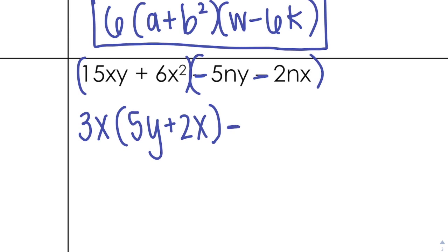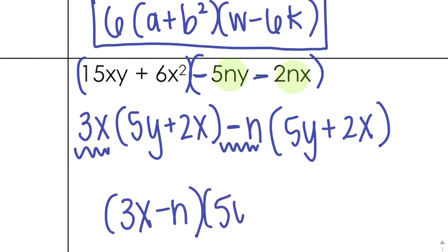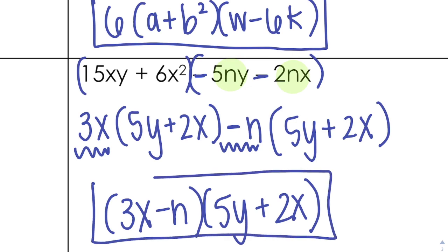I notice they both have an n in common, so I'm going to take out negative n. I'm left with 5y plus 2x — positive — because I took out a negative and changed the sign. So one factor is (3x minus n) and the other factor is (5y plus 2x). Even though it's not in alphabetical order, that's okay — it's in the order we factored it in.